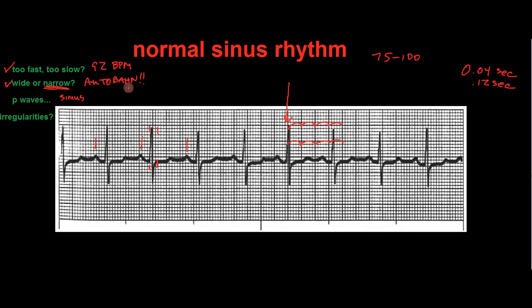It would be sinus tachycardia if the QRS's were closer together — over 100 beats per minute. If they were less than 60 beats per minute, that would be a sinus bradycardia. We're in that happy zone between 60 and 100 beats per minute, so we are in a normal sinus rhythm.